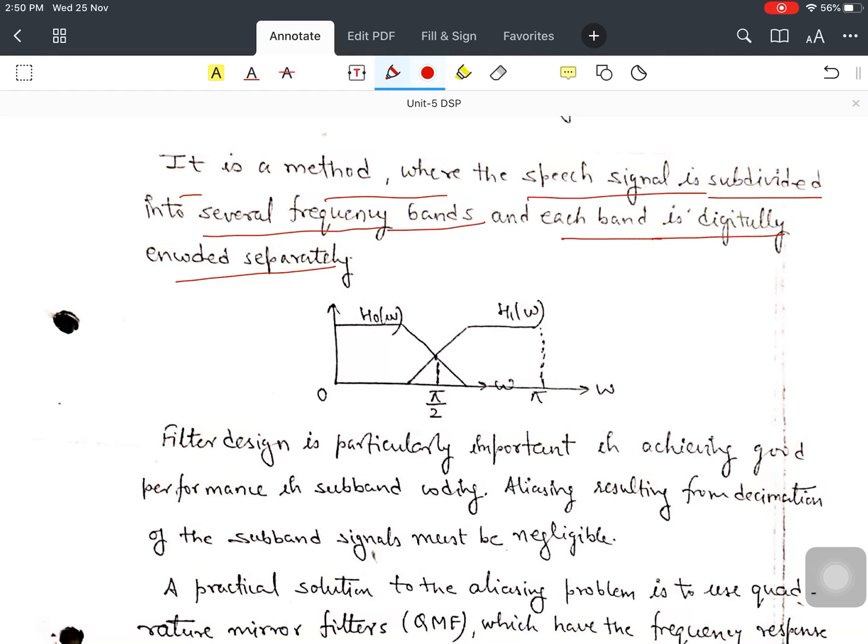As the name suggests, subband means dividing into several frequency bands. You divide the band into subdivided parts, and each subdivided part is individually encoded. Let us see in this figure, we have this response.